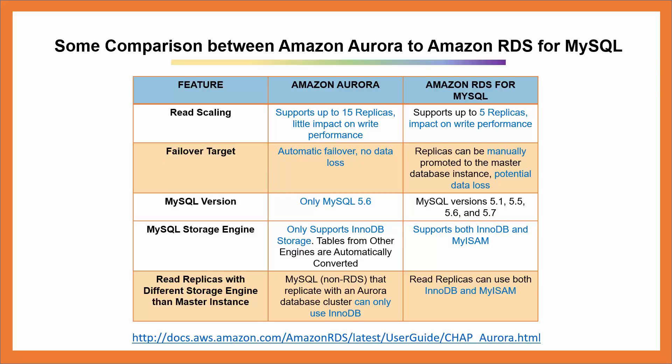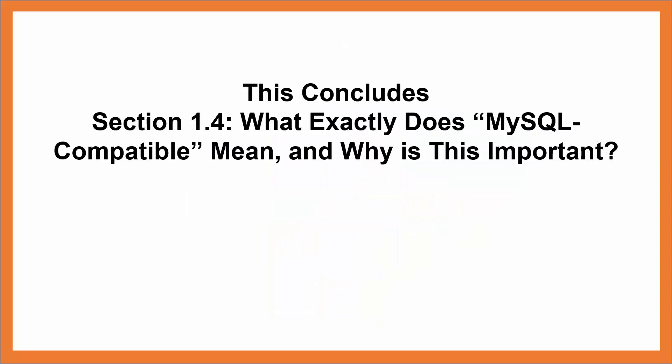Amazon Aurora only supports the InnoDB storage engine. The reason for this is so that your existing MySQL applications and tools can run in Amazon Aurora without any modification. The way InnoDB storage works is in line with Amazon Aurora's unique architecture. If the MyISAM storage engine is used, MySQL doesn't comply with the full SQL standard for some of Amazon Aurora's implemented functionalities. This concludes section 1.4.